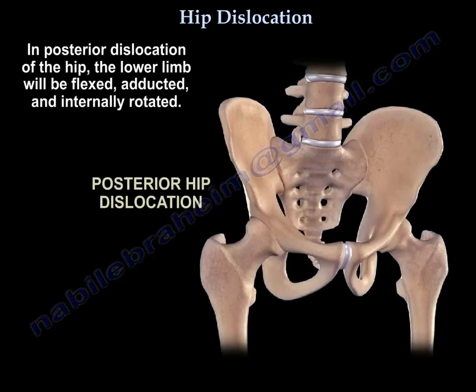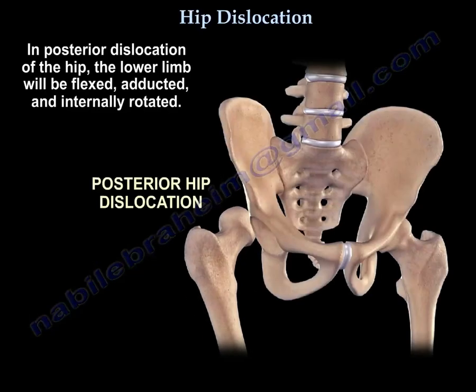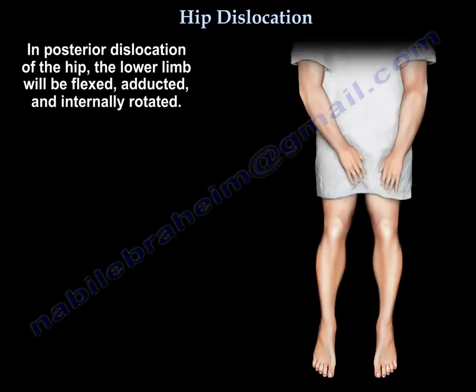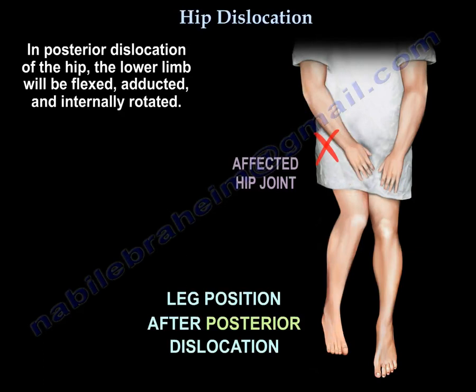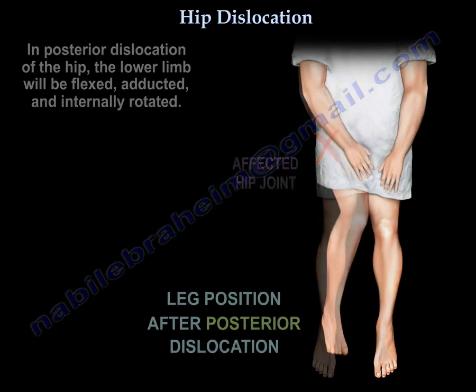In posterior dislocation of the hip, the lower limb will be flexed, adducted, and internally rotated. Here is a normal position of the lower extremities, and here is the position of the lower extremity after posterior dislocation of the hip.